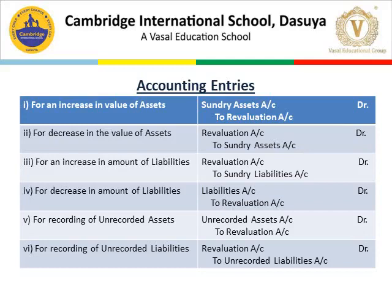Journal entry number three: for increase in the amount of liabilities, the entry will be revaluation account debit to sundry liabilities. Number four: for decrease in the amount of liabilities, journal entry will be liabilities account debit to revaluation account. Number five: for unrecorded assets, the journal entry will be unrecorded assets account debit to revaluation account. Number six: for unrecorded liabilities, revaluation account debit to unrecorded liabilities account.